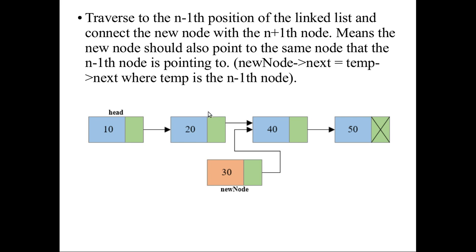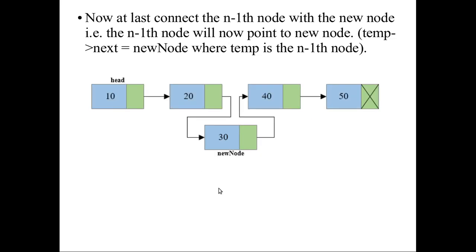Once you have reached the (n-1)th node (node 20), you give a connection from the new node to the (n+1)th node. The new node's address field points to the next node (40). Then you take the existing link between 20 and 40 and connect node 20's address field to the new node instead. So three steps: traverse to (n-1)th node, link new node to (n+1)th node, then link (n-1)th node to the new node.